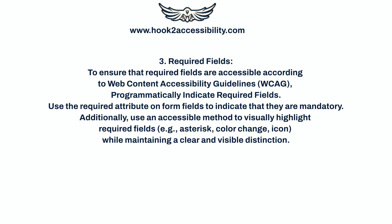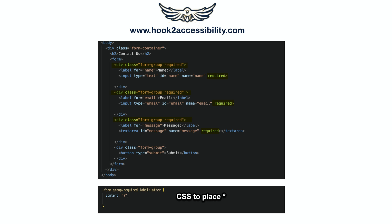Required fields. To ensure that required fields are accessible according to WCAG, programmatically indicate required fields. Use the required attribute on form fields to indicate that they are mandatory. Additionally, use an accessible method to visually highlight required fields — for example, an asterisk, color change, or icon — while maintaining a clear and visible distinction. This screenshot of the code snippet shows that the required fields are coded to help sighted and non-sighted users identify them. The following video shows how a screen reader announces the required field if it is programmatically indicated.